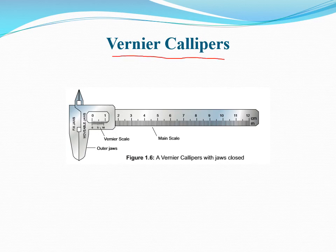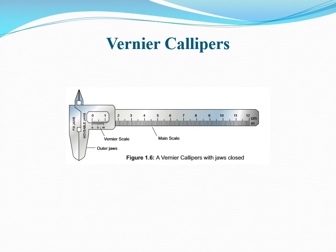A Vernier Calipers consists of 2 jaws as shown in figure 1.6. One is a fixed jaw with main scale attached to it. The main scale has cm and mm marks on it. The other jaw is a movable jaw. It has a Vernier scale having 10 divisions over it, such that each of its divisions is 0.9 mm. So Vernier Calipers has 2 scales: fixed main scale and movable vernier scale.